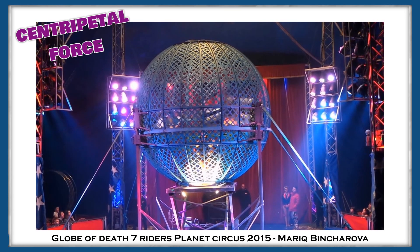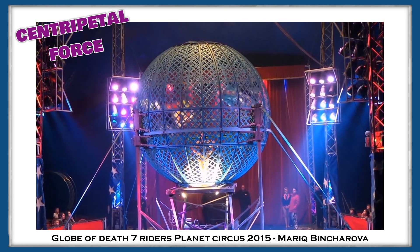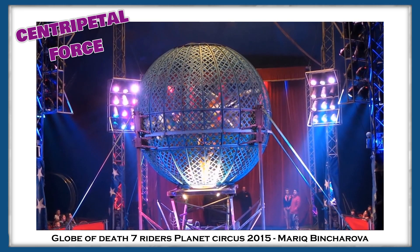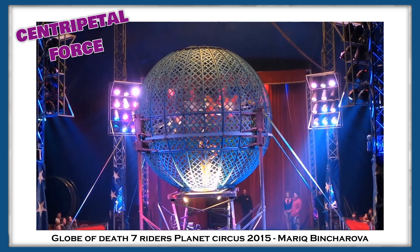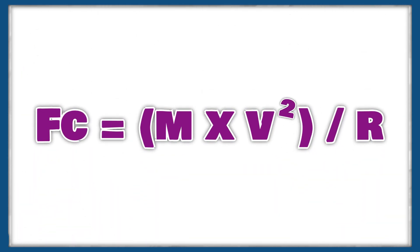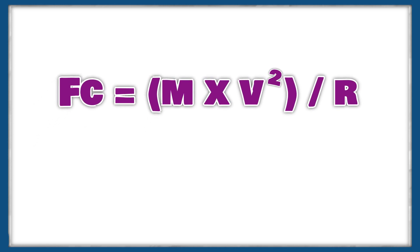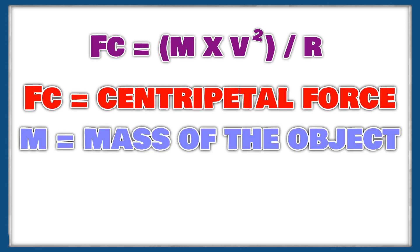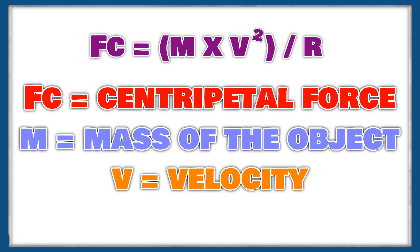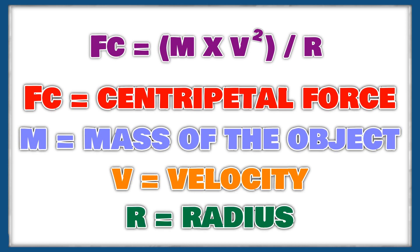The physics in this stunt are actually pretty interesting, as all of the riders inside the ball are acting against gravity thanks to centripetal force. In order to calculate centripetal force, you use a simple equation: Fc equals m times v squared divided by r. In this equation, Fc is the centripetal force, m is the mass of the object — which in this case will be Homer plus the weight of a bike — v is the velocity at which the object is moving, and r is the radius of the circular path.